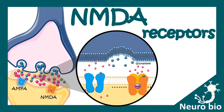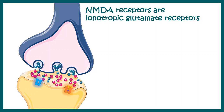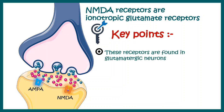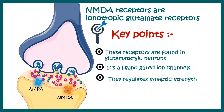In this video, we'll talk about NMDA receptors or N-methyl-D-aspartate receptors. NMDA receptors are one type of ionotropic glutamate receptors, so they are found in the glutamatergic synapses. It's a ligand-gated ion channel and it regulates synaptic strength and plasticity. It is also involved in memory formation. We'll talk about NMDA receptor, its properties and its function in detail.